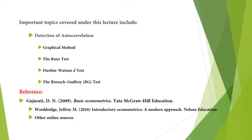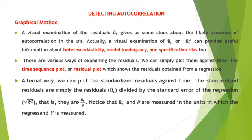First, we will discuss the graphical method. Then we will move on to some important tests for detecting autocorrelation: the Runs test, the Durbin-Watson D-test, and the Breusch-Godfrey tests. There are different methods to detect autocorrelation, ranging from graphical methods to various statistical tests.